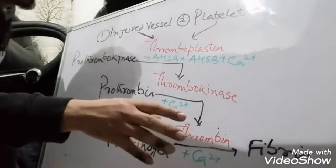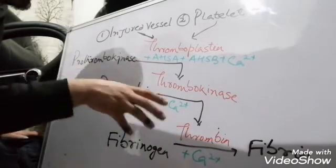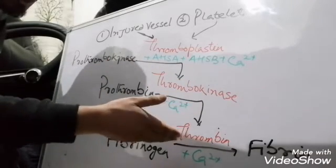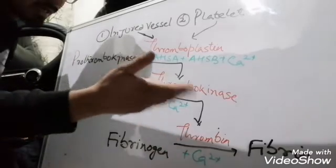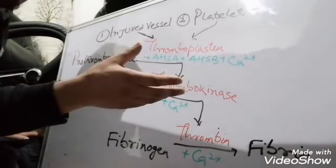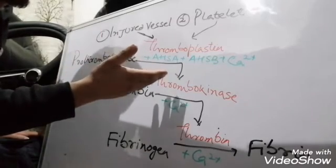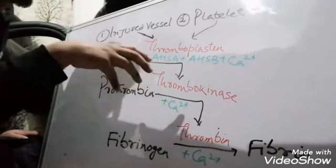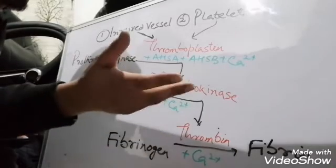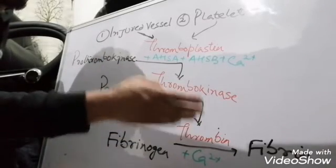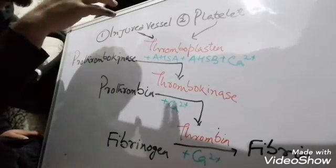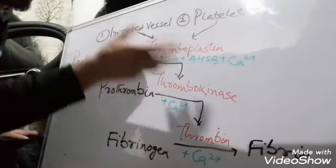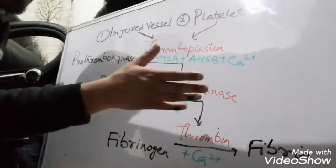All those substances which are involved in the process of formation of fibrin — such as thrombin, fibrin, calcium, thrombokinase, prothrombin, thromboplastin, prothrombokinase, AHSB, and calcium — we call all these substances clotting factors. A clotting factor is every substance which is involved in fibrin formation. There are 13 clotting factors in total.